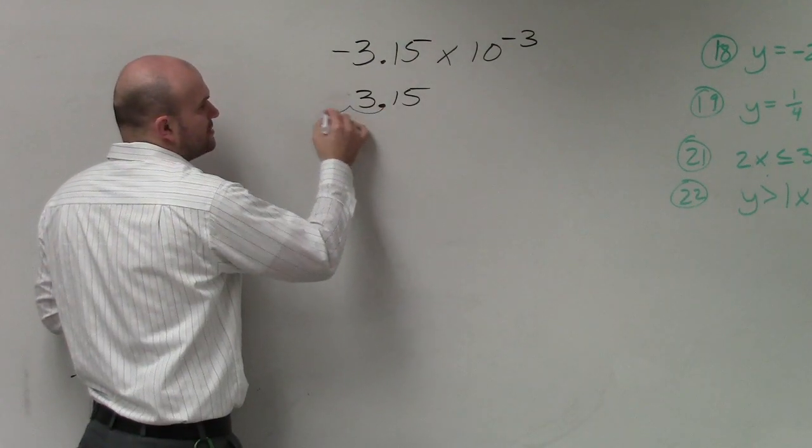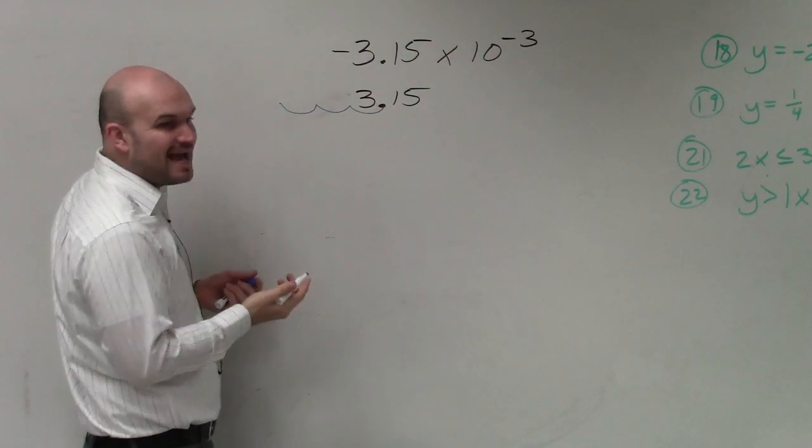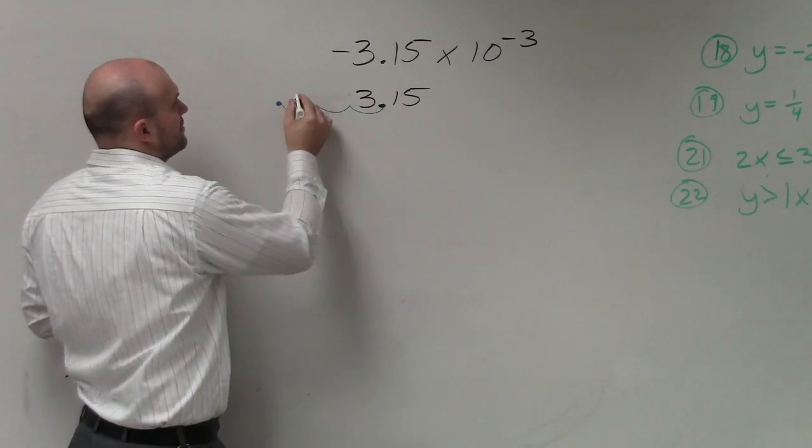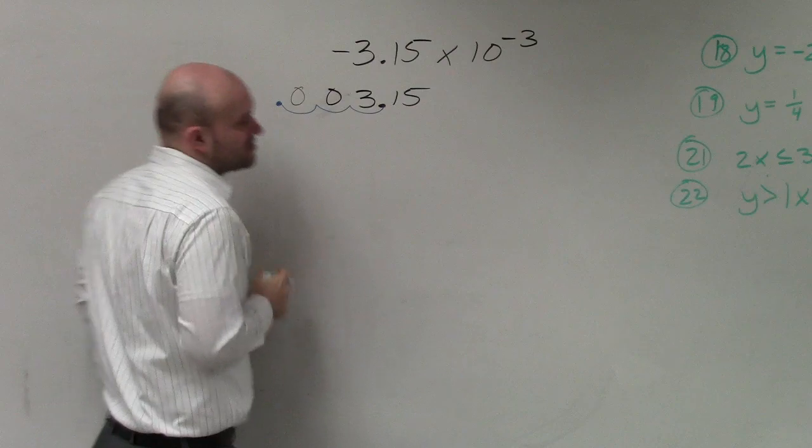So 1, 2, 3. And again, just like I did on the last problem, for all my empty spaces, I will include zeros as my placeholders.